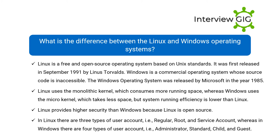What is the difference between Linux and Windows? Linux is a free and open-source operating system based on Unix standards; it was first released in September 1991 by Linus Torvalds. Windows is a commercial operating system whose source code is inaccessible; it was released by Microsoft in the year 1985.